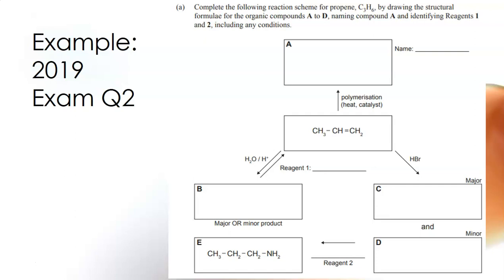So if we look at first going up from propene going up to compound A it tells you that it is polymerization. So if you are polymerizing propene then the polymer must be polypropene so you can write that name down.